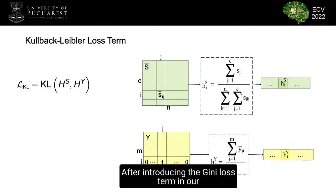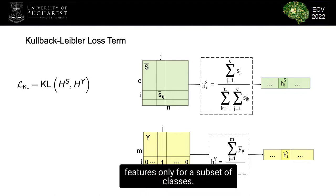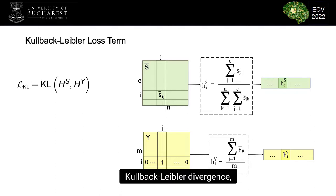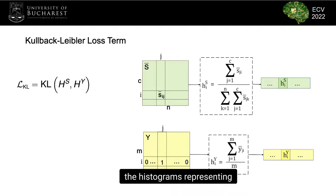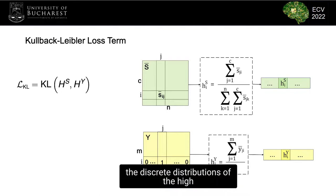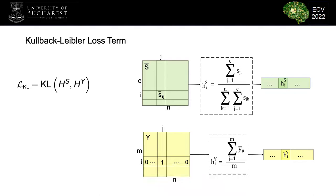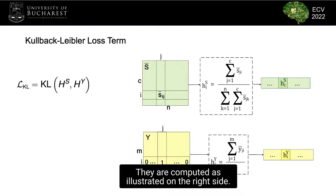After introducing the Gini loss term in our training process, the models might learn discriminative features only for a subset of classes. Hence, we add the loss based on Kullback-Leibler divergence to avoid such scenarios. The formula for this term is on the left side. Hs and Hy are the histograms representing the discrete distributions of the high-level features and the class labels, computed as illustrated on the right side.